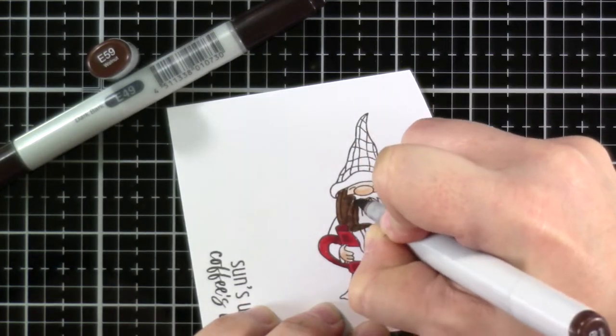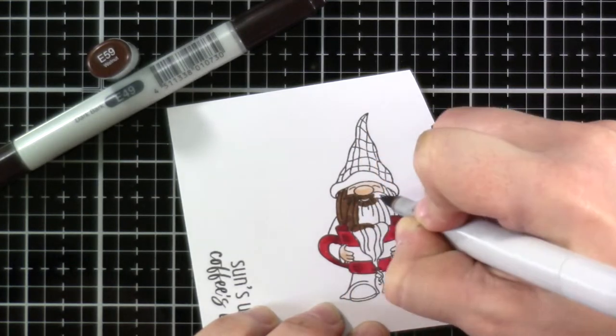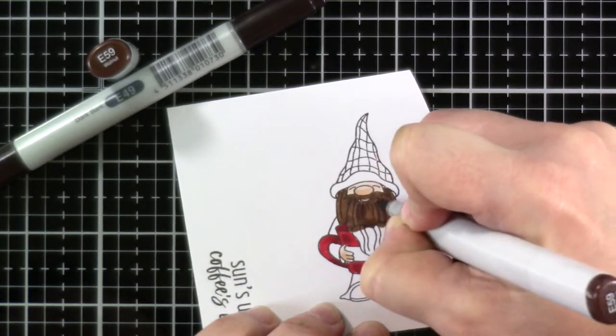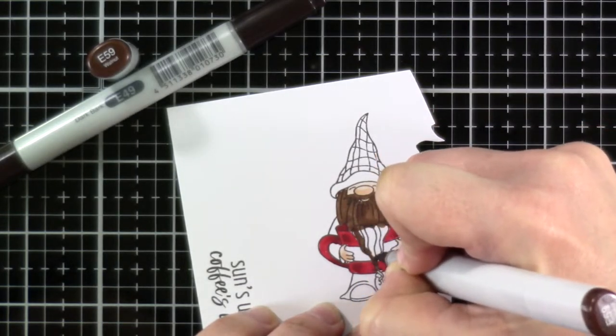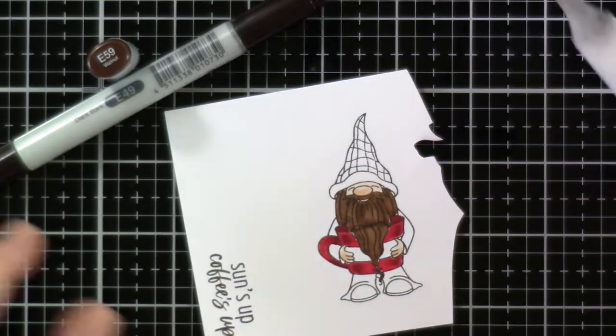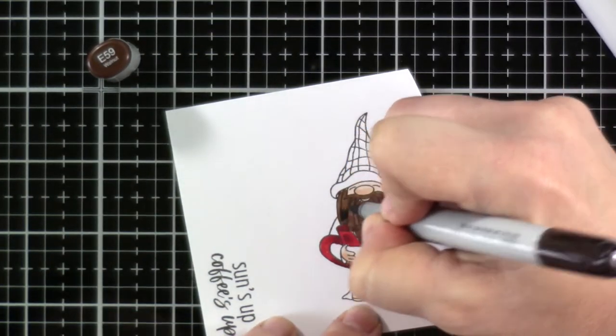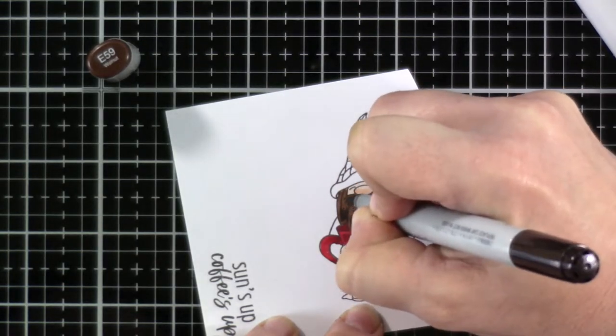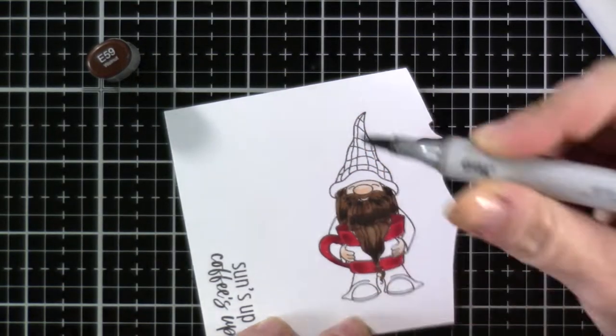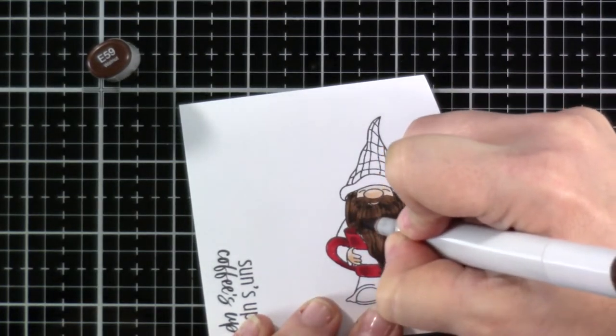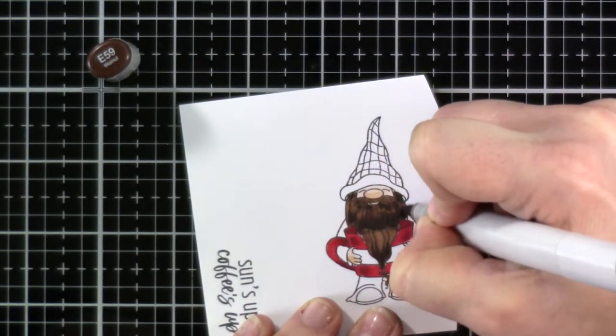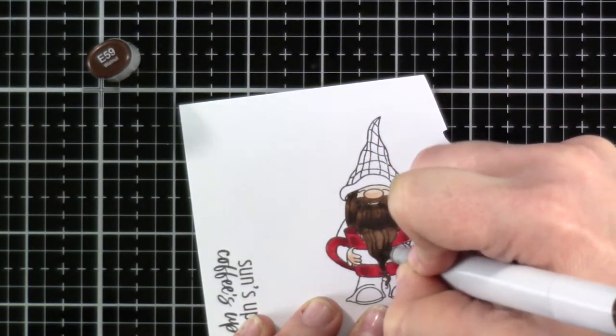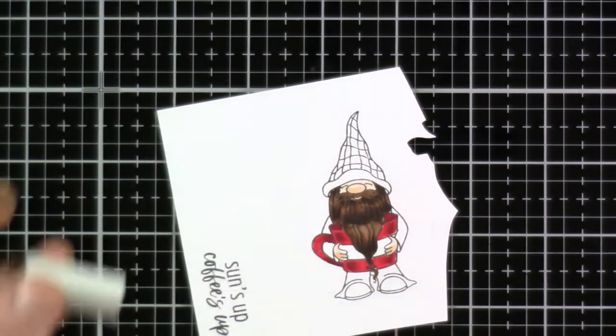And then for his beard, we're doing some E59. And then the darker shade is going to be E49. It's kind of funny to think that the E49 would be darker than the E59, but that is just how that works. And you'll notice I talk about the colors as each letter and number is separate. So it's not E59, it's E five nine, because each of those letters and numbers has a value. And so now we're coming in with that E59 and we're blending out the E49 a little bit more. I just think it's so cute. His little beard dipped into his coffee.